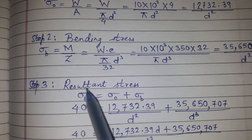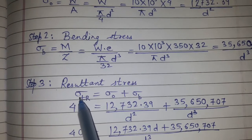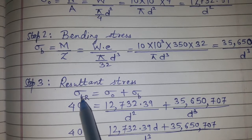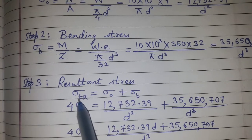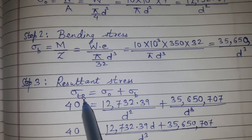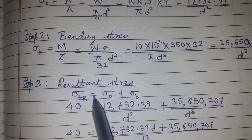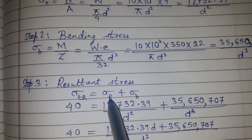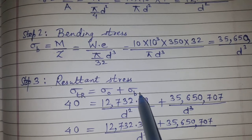Step 3: Resultant stress. The maximum tensile stress equals the direct stress plus the bending stress: σ_R = σ_d + σ_b.